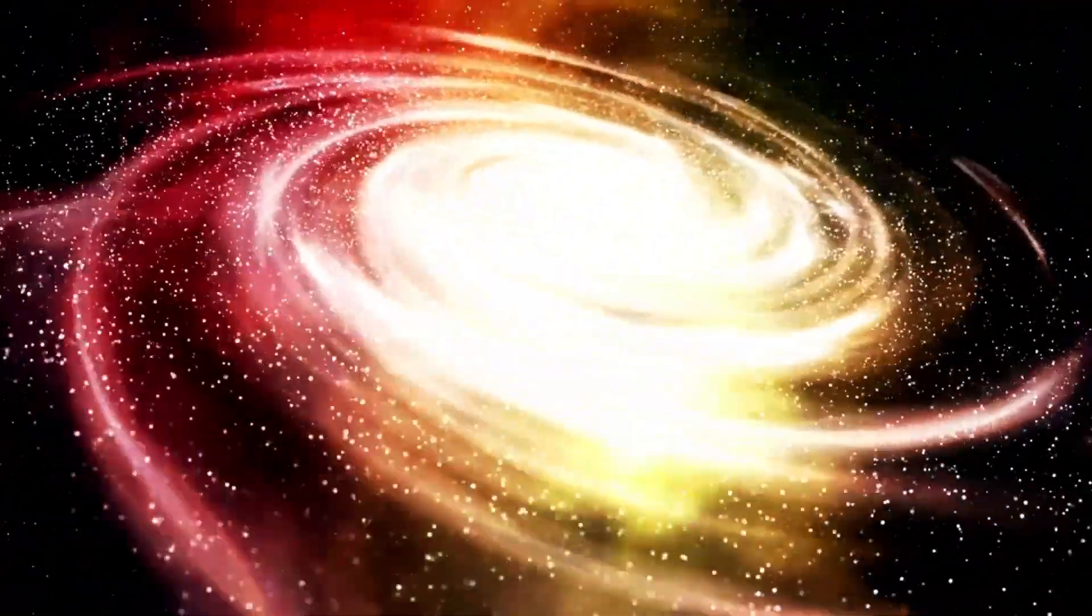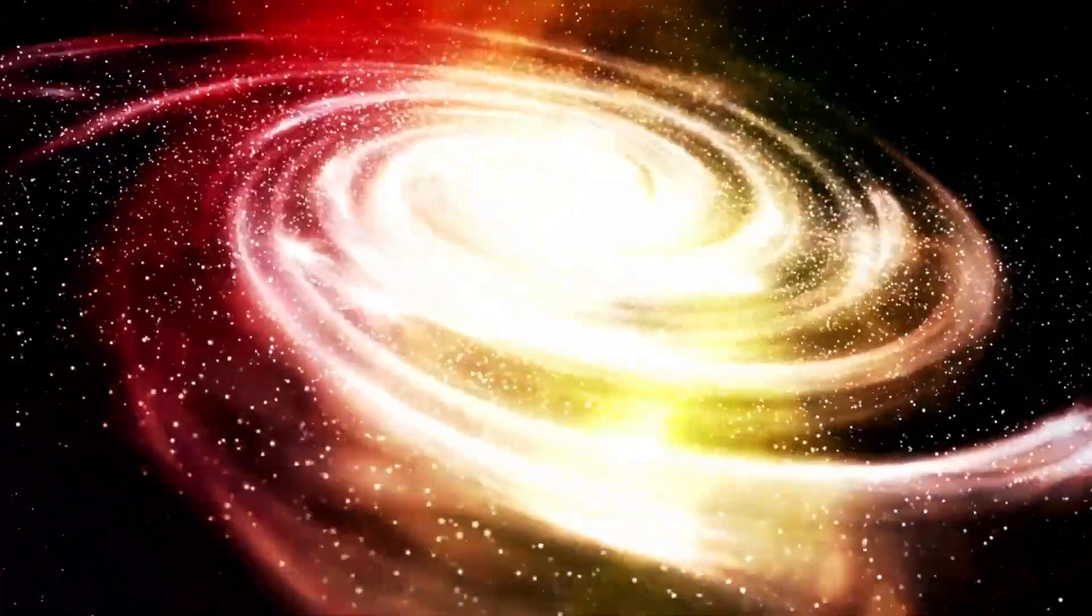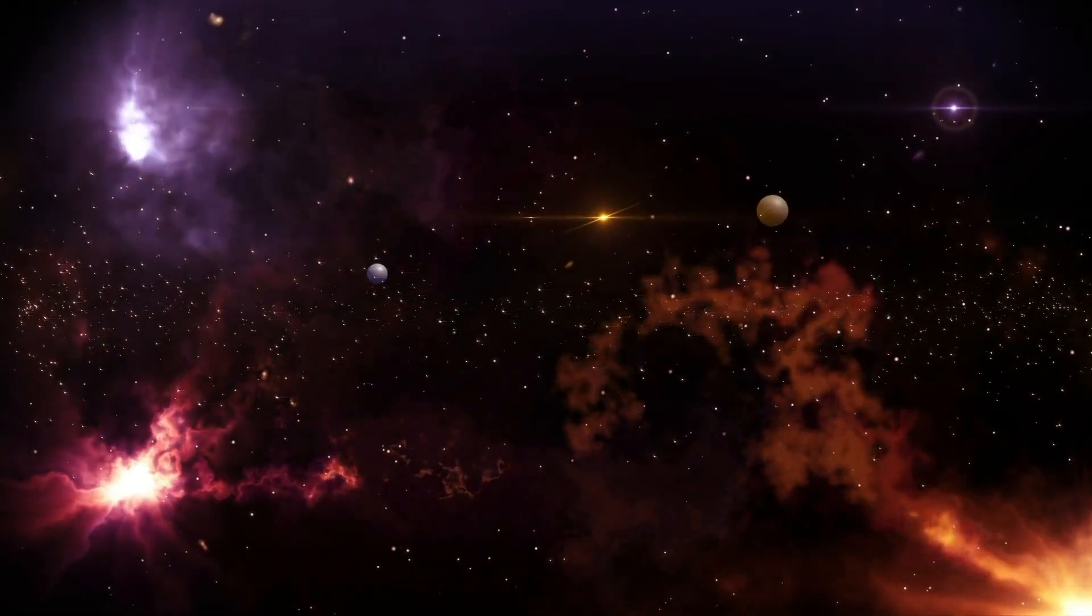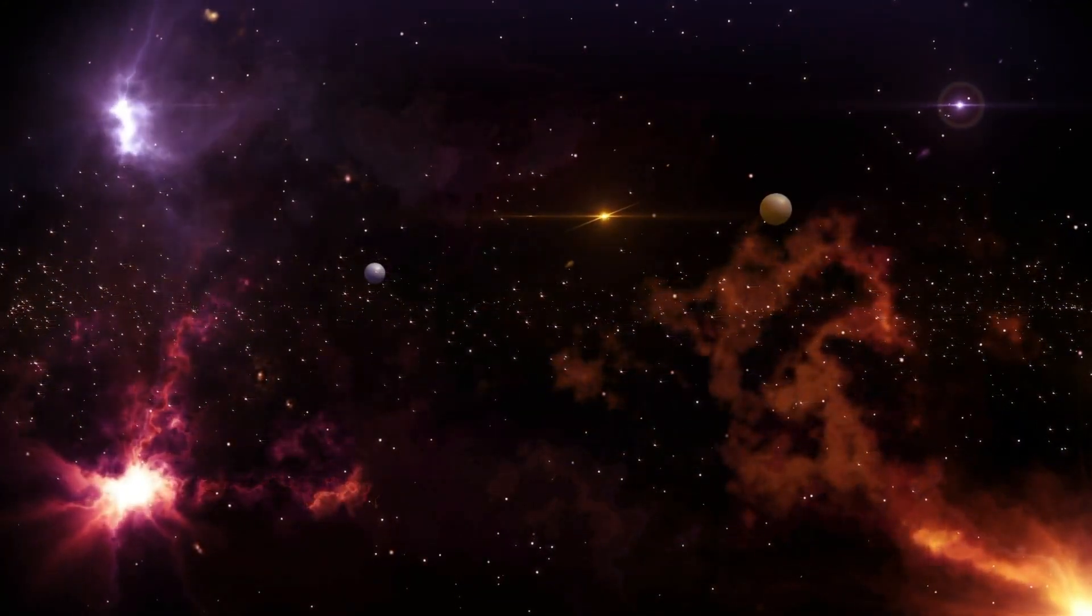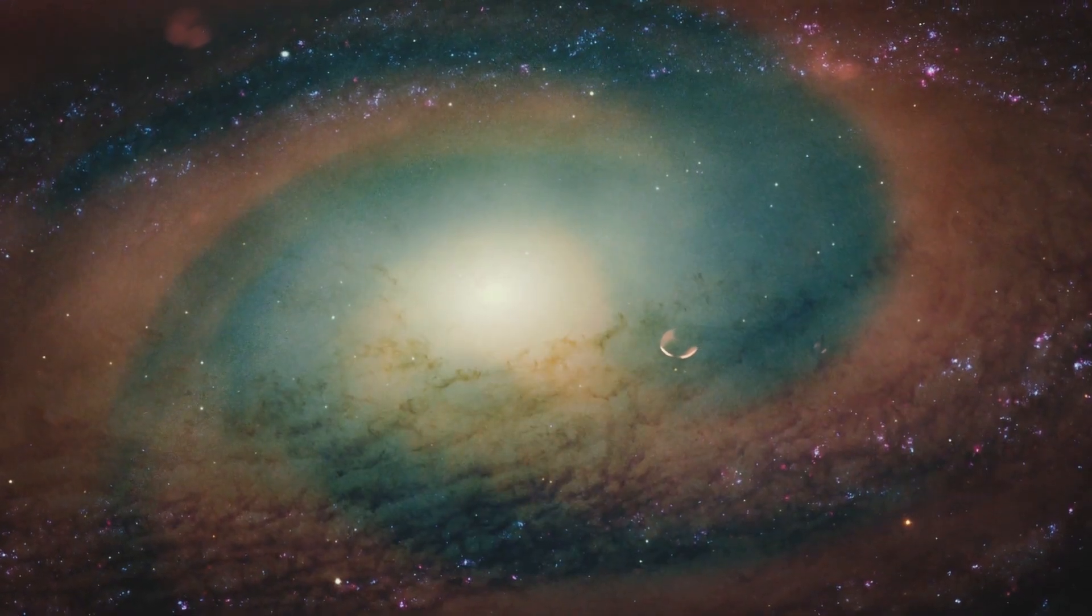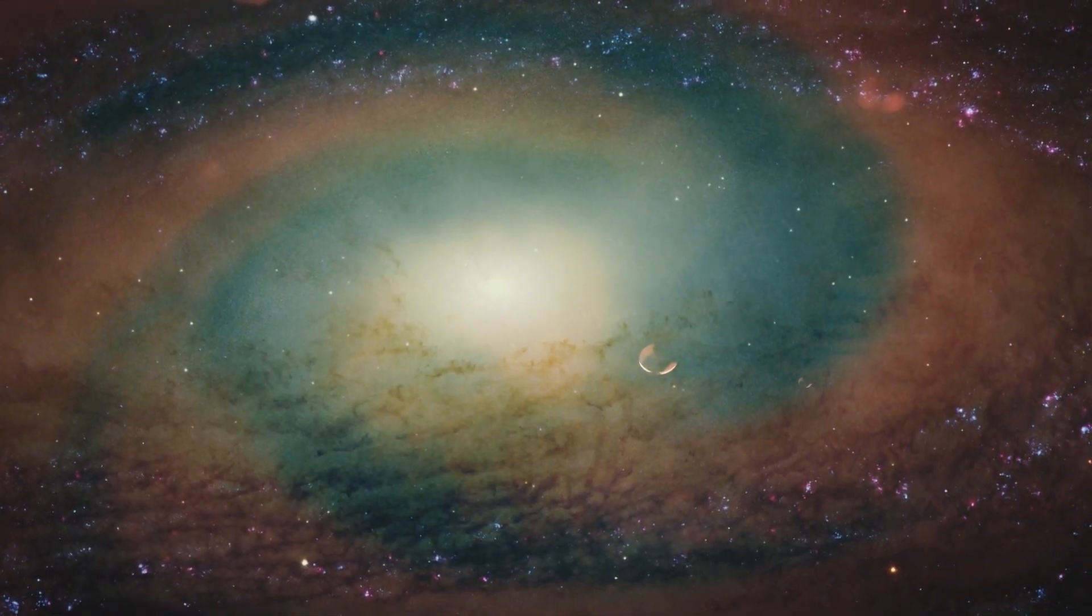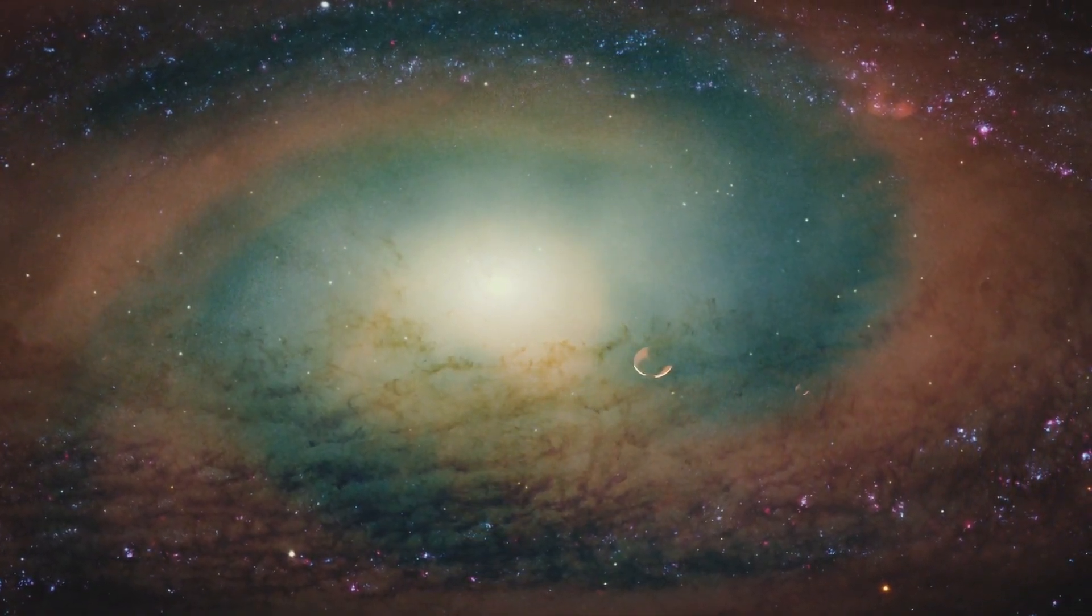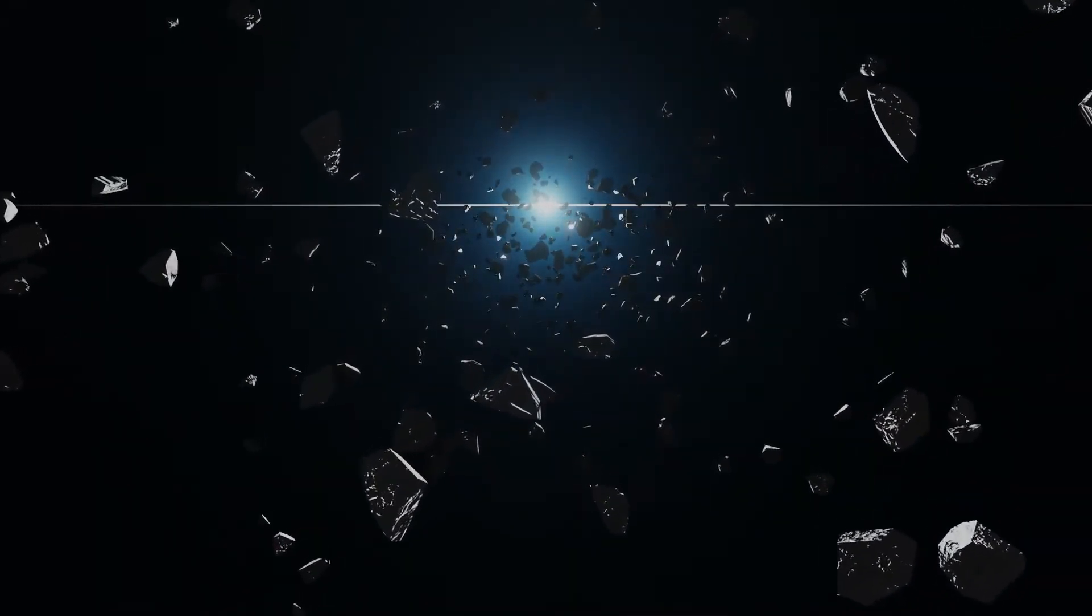Known as a red supergiant, Betelgeuse is a massive star in the constellation Orion, located roughly 600 light years from Earth. Its massive size is one of its most striking features. If placed at the center of our solar system, it would easily encompass the orbit of Jupiter. However, it remains a significant celestial body.